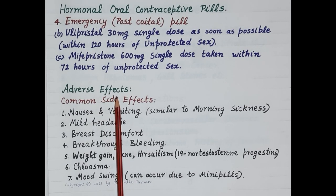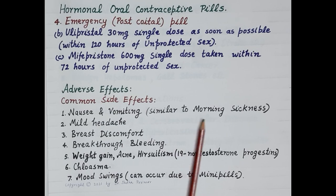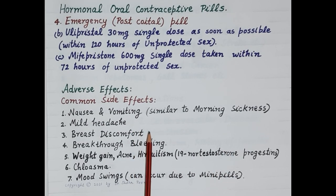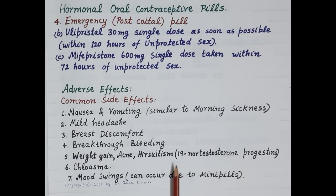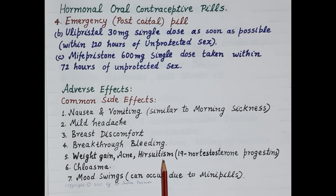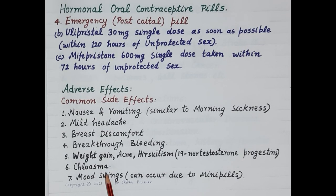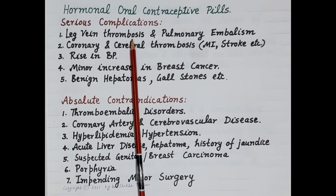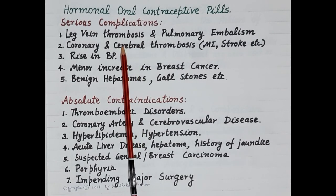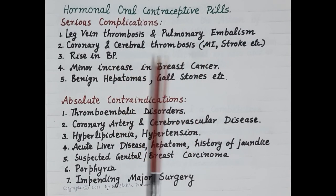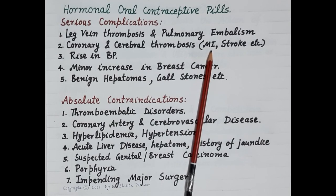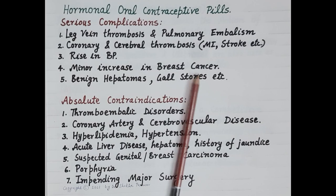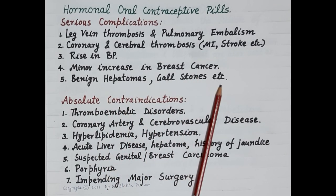Common adverse effects of hormonal oral contraceptive pills include nausea and vomiting similar to morning sickness, mild headache, breast discomfort, breakthrough bleeding, weight gain, acne, and hirsutism (growth of hair on the face and body) associated with 19-nor testosterone progestins. Other side effects include chloasma (pigmentation of the skin) and mood swings. Serious complications include leg vein thrombosis, pulmonary embolism, coronary and cerebral thrombosis causing myocardial infarction or stroke, rise in blood pressure, minor increase in breast cancer risk, benign hepatomas, and gallstones.